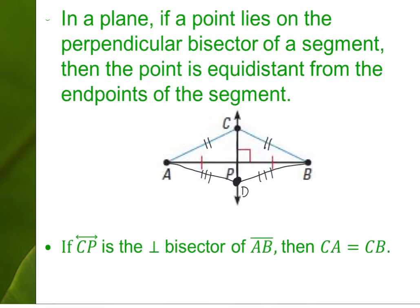If it's the perpendicular bisector, points must lie along it — that's what the perpendicular bisector theorem states. If you can prove that CP is the perpendicular bisector of AB, then any two sides from a point on that bisector must be congruent.